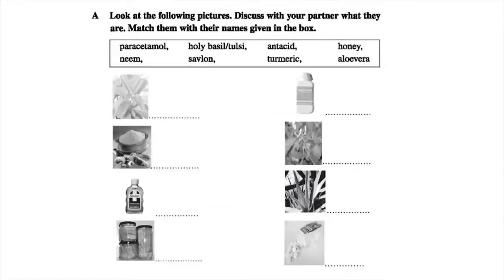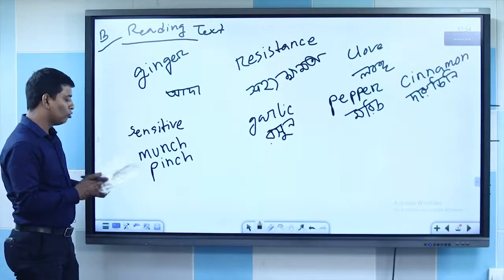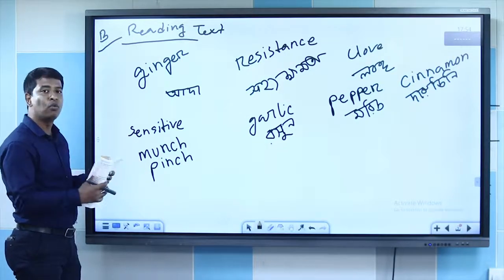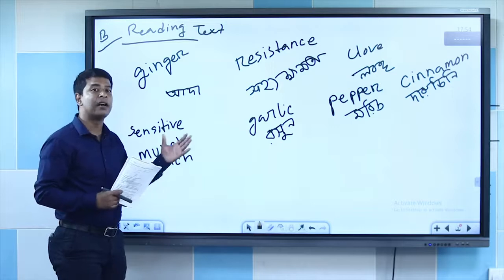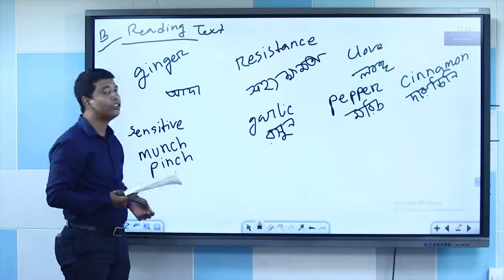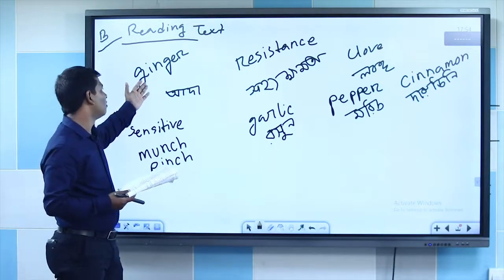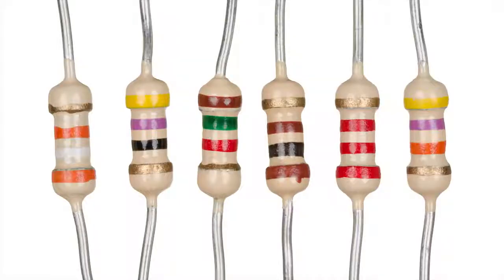Now you can easily match the pictures and words. Let's go to section B. We have a reading passage, and I am going to make the meaning of some words clear. Ginger — G-I-N-G-E-R — ginger means 'adha' in Bangla. Resistance means tolerance or ability; it is usually used for mechanical purposes, like in your radio or mobile phone.